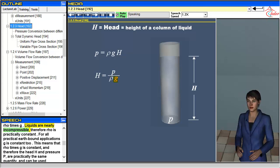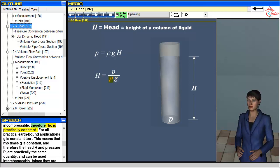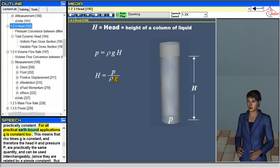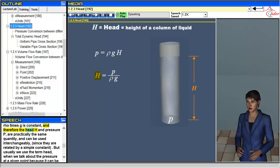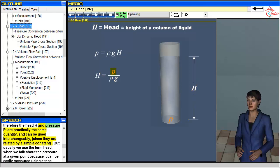Liquids are nearly incompressible. Therefore rho is practically constant. For all practical earthbound applications g is constant too. This means that rho times g is constant, and therefore the head H and pressure P are practically the same quantity and can be used interchangeably.